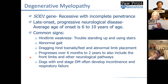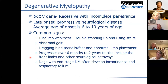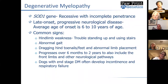Dogs that develop more end-stage degenerative myelopathy usually develop incontinence and respiratory failure. Respiratory failure is a common cause of death in people with Lou Gehrig's disease, and so that makes sense as the end stage here. Obviously something we would want to avoid in our dogs. The only real way to prevent it would be to prevent dogs from having two copies of the mutation.